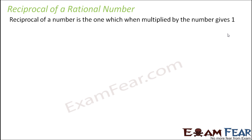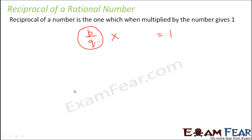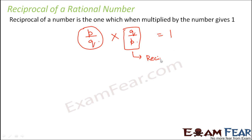Before that, what exactly is reciprocal? The reciprocal of any number is that number which when multiplied by the original number gives 1. So if we have a rational number in the form of p by q, what is that number which when multiplied by p by q gives 1? Just think of q by p. If you multiply p by q with q by p, you get 1. So q by p is the reciprocal of p by q.